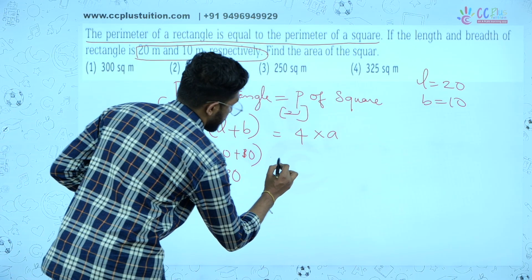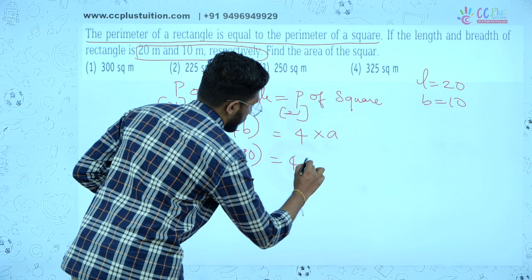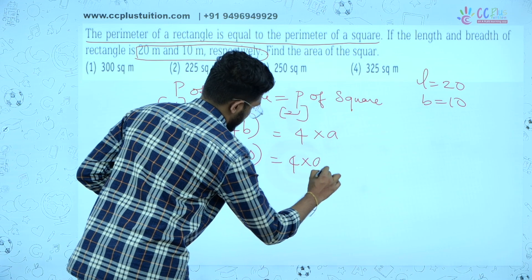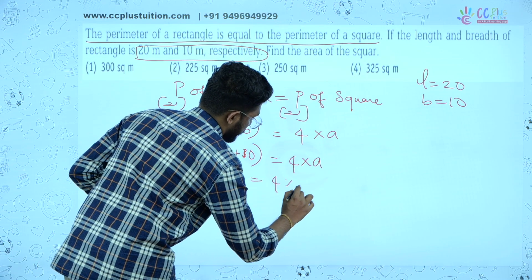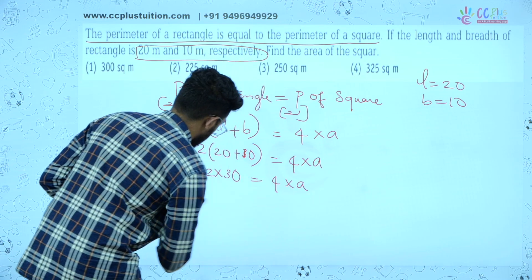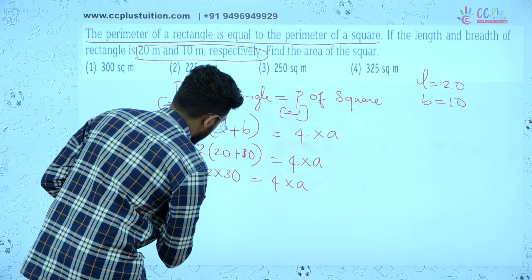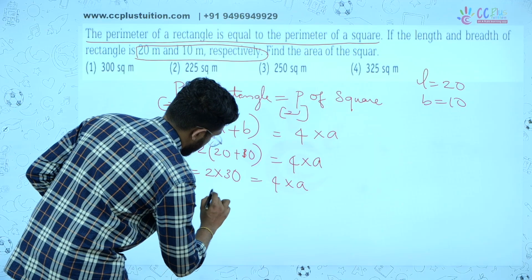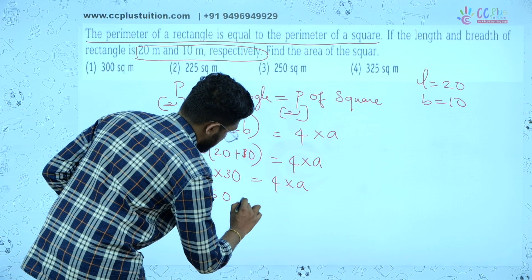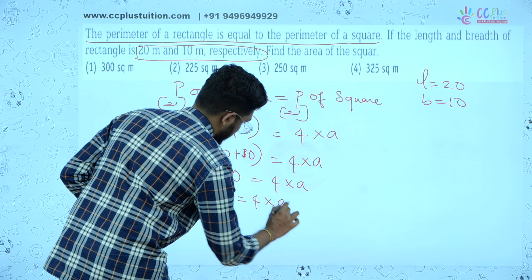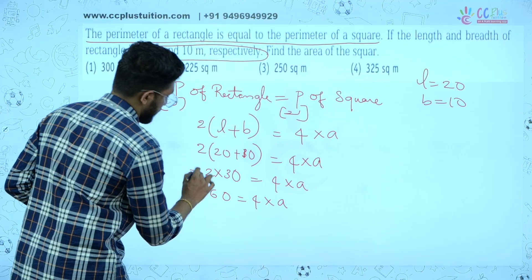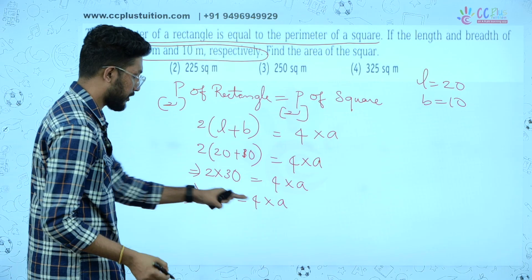This is equal to 4 into A. So 60 is equal to 4 into A.